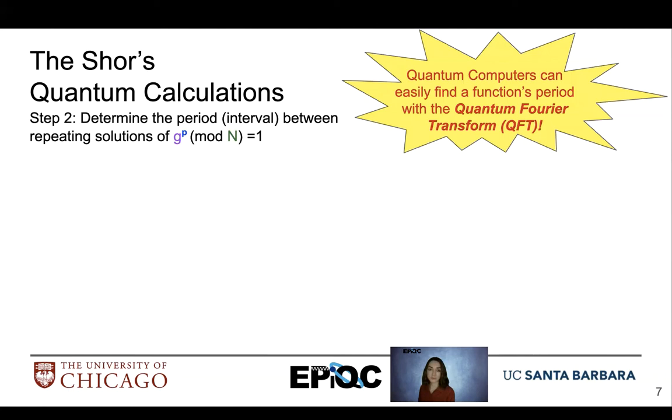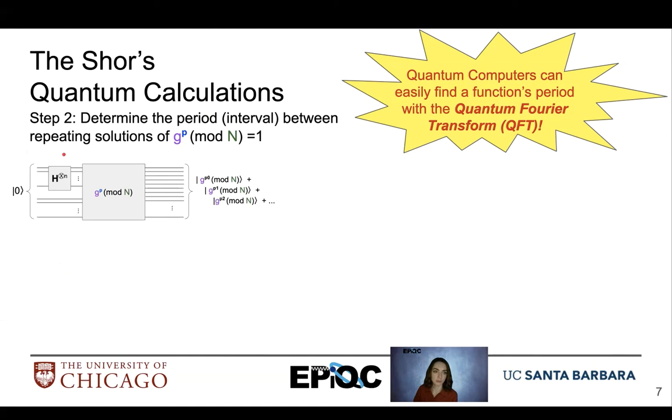Fortunately for us, the quantum Fourier transform, or QFT, can easily find its functions period quickly and efficiently. We're not going to go into depth about the QFT, but I would highly recommend looking up more information about it. The circuit structure is very well known and clearly defined, so it's a building block for many popular quantum algorithms. So here we have our first part of our quantum circuit, our superposition, our calculation of g to the p mod n, and then we use the QFT to help us find the interval at which the answer of 1 reappears.